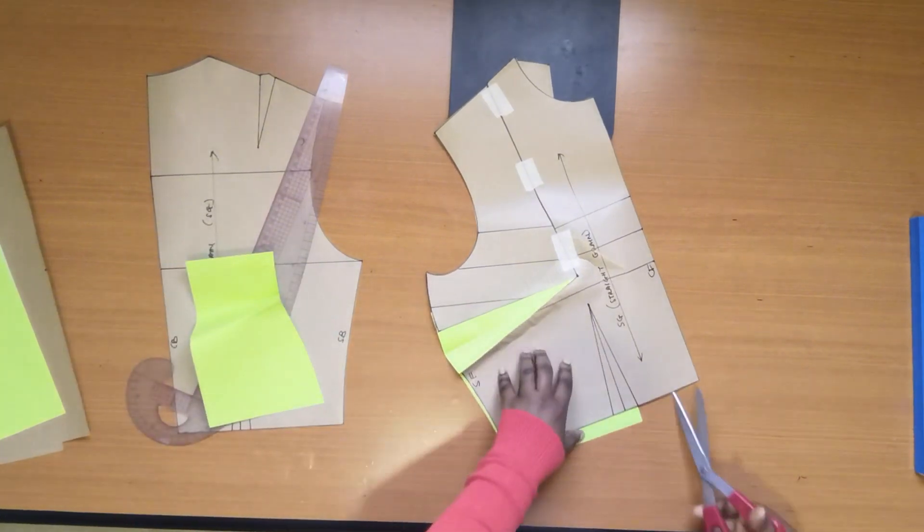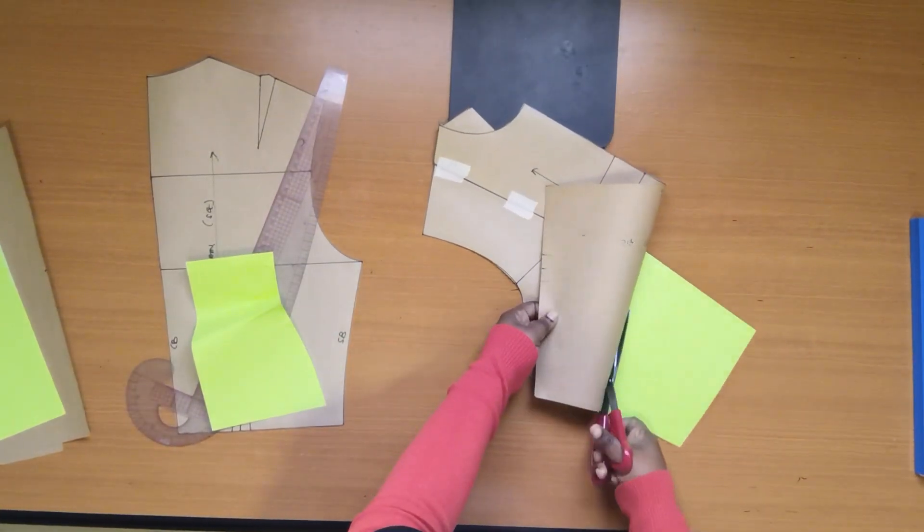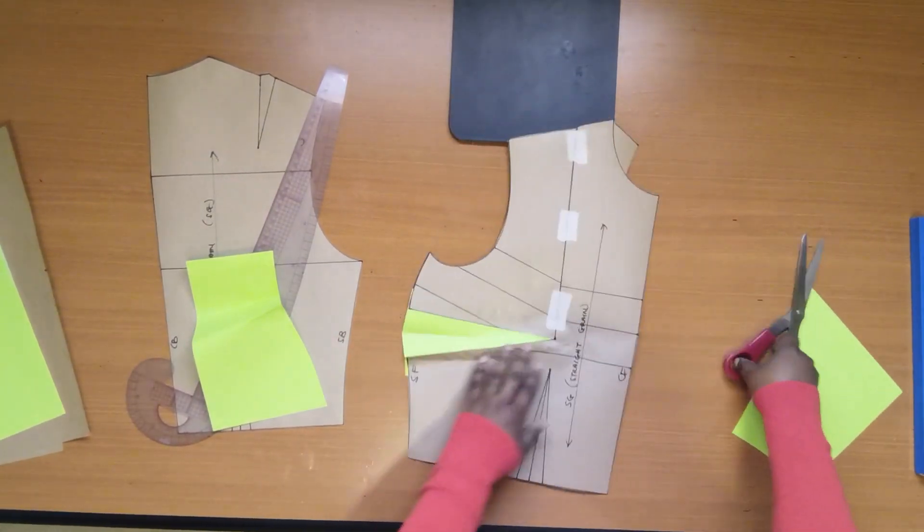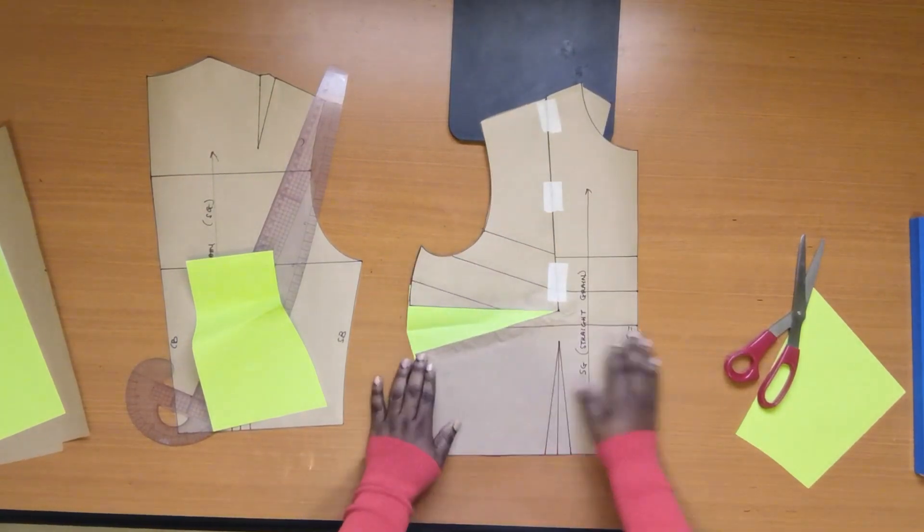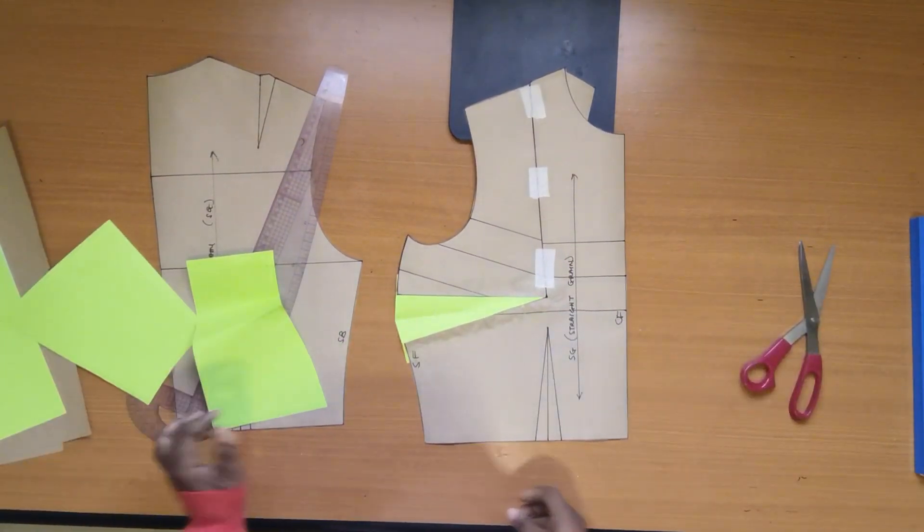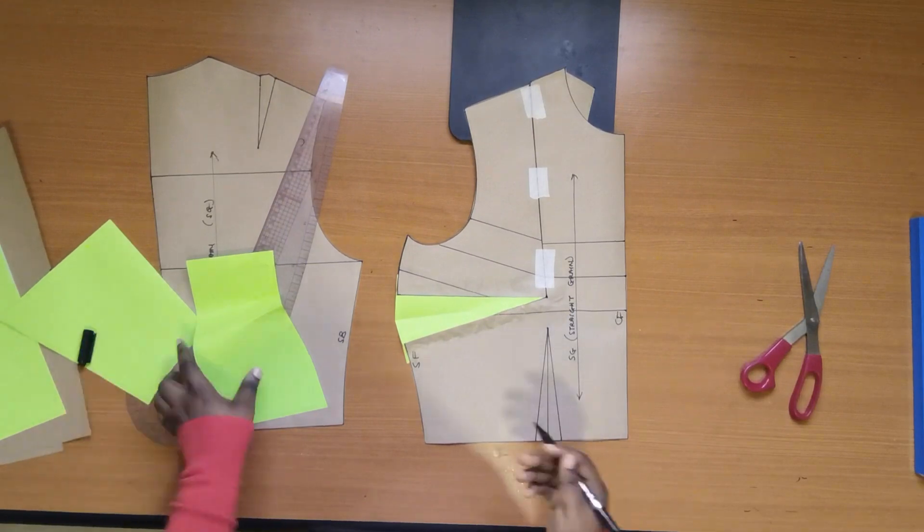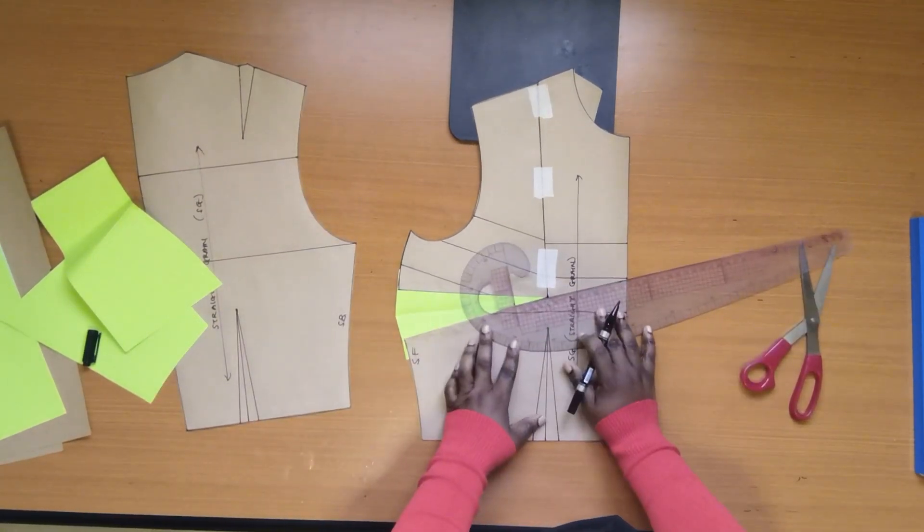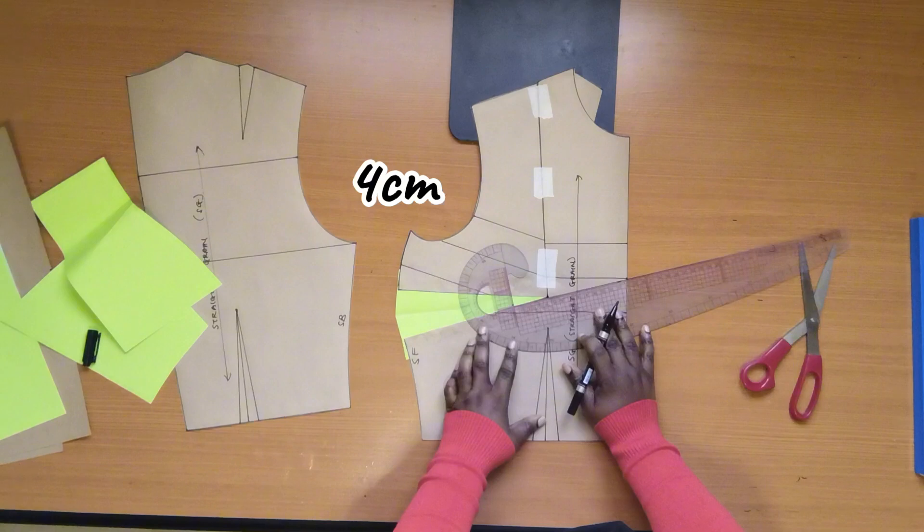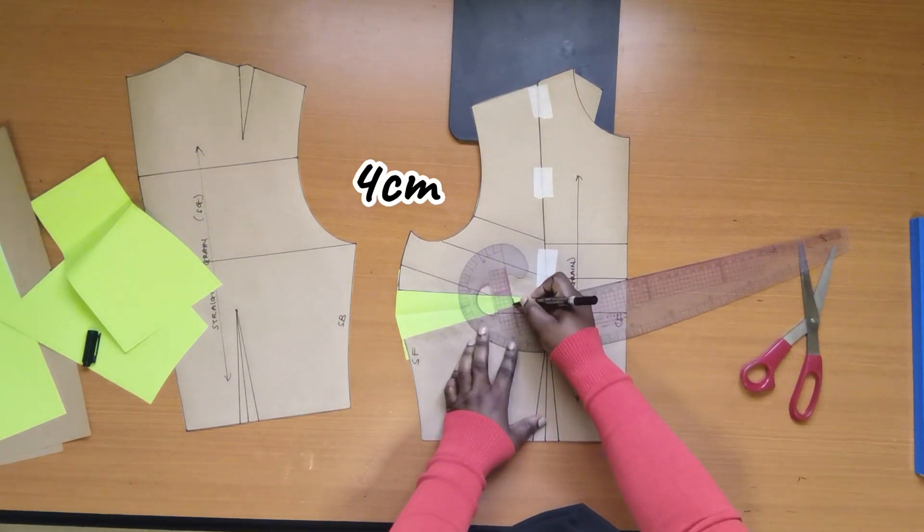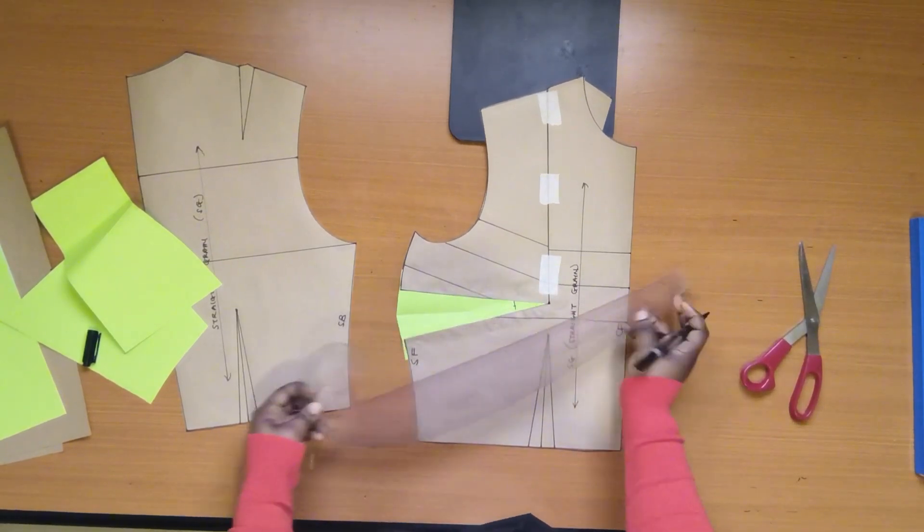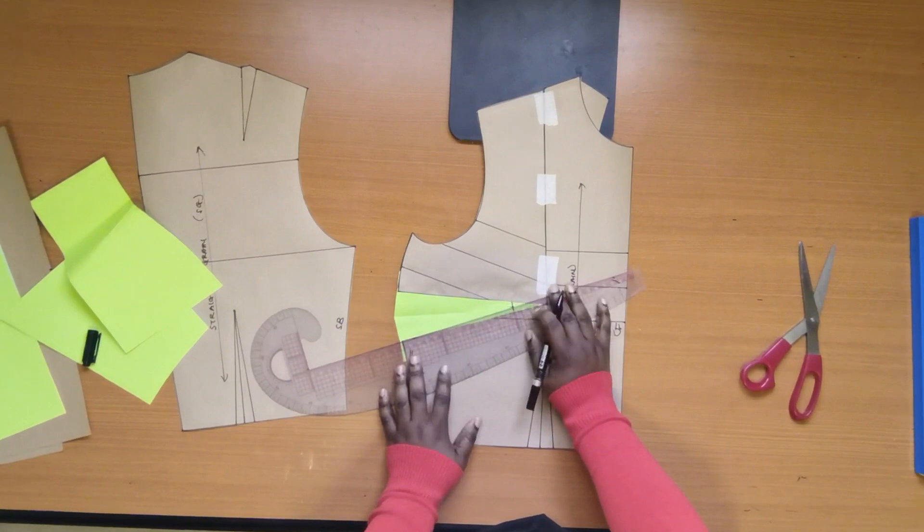The last step will be to move the new dart about 4 cm away from the bust point. This is done in order to give a relaxed effect in finished garments rather than a pointy or pokey one. Draw in the new dart.